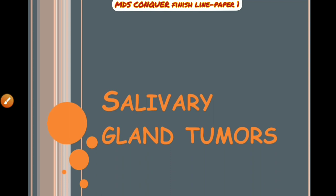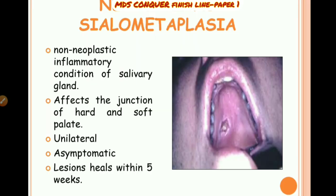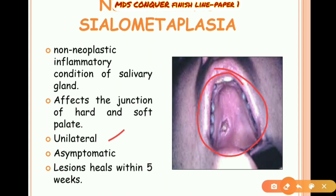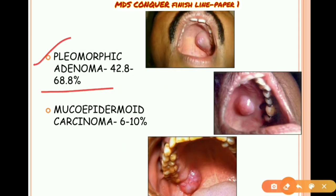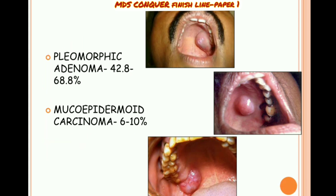Minor salivary gland tumors can involve the palate. Necrotizing sialometaplasia is an inflammatory and non-neoplastic condition seen unilaterally, mostly at the junction of the hard and soft palate, due to trauma. Pleomorphic adenoma is seen in 68% of cases; mucoepidermoid carcinoma can also involve the palate.